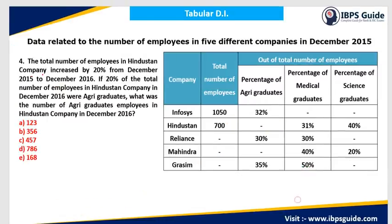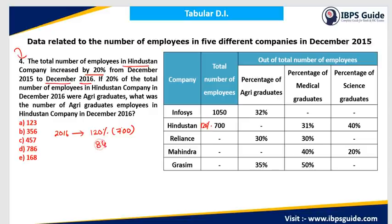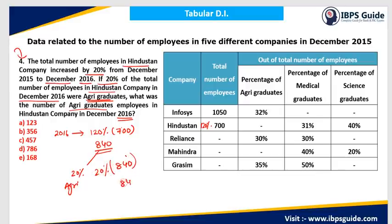Question 4: The total number of employees in Hindustan company increased by 20% from December 2015 to December 2016. Initially it was 700, so in 2016 it becomes 120% of 700 = 840. If 20% of the total employees in Hindustan in December 2016 were agricultural graduates, then the number of agricultural graduates = 20% of 840. Since 10% is 84, then 20% = 168. The answer is Option E.